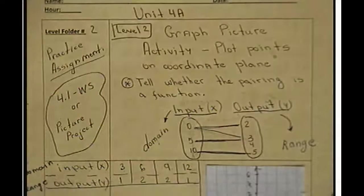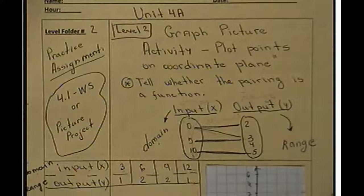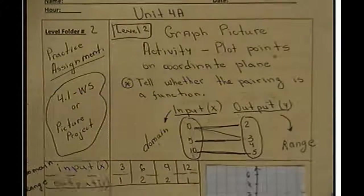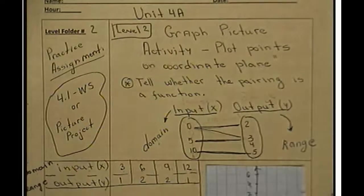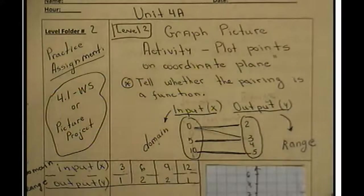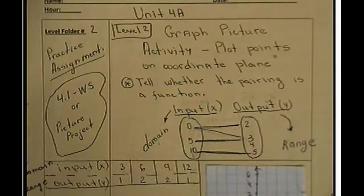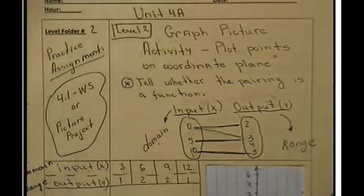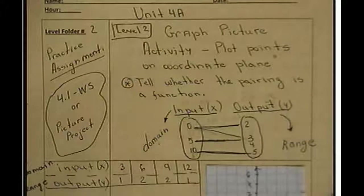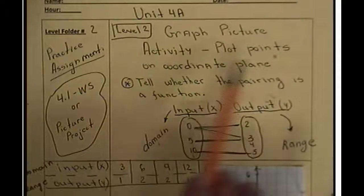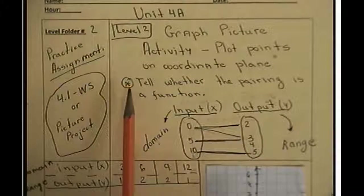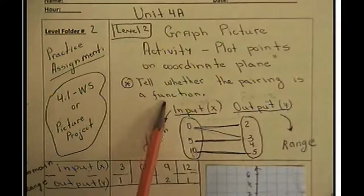Hello everyone, so today we're going to talk about the second mission of graphing functions and the main focus will be on plotting some ordered pairs, talking about what the function means for a table or for given ordered pairs. Do we have a function or not? How to check for this? So go ahead and write down the name of this lesson: graph picture activity, plot points on coordinate plane, and we will be able to tell whether the pairing is a function.